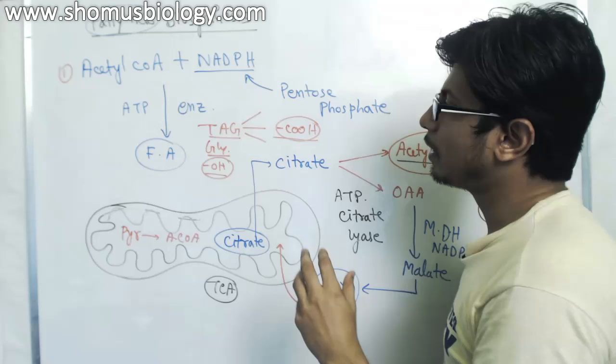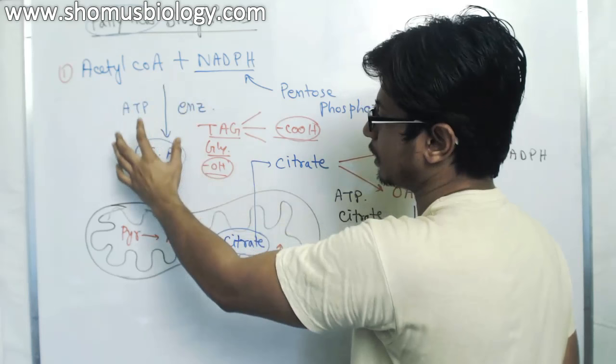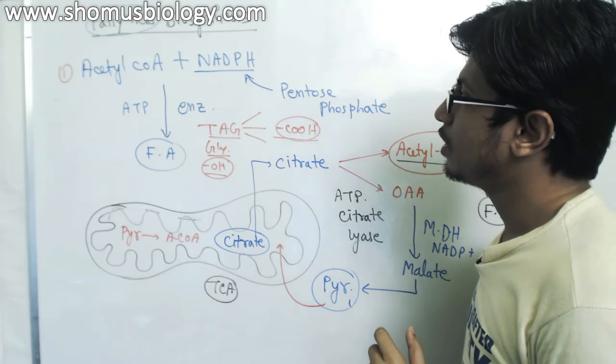In fatty acid biosynthesis, we talked about how acetyl-CoA and NADPH work as substrates to produce the fatty acid of desire using enzymes as an energy-consuming process.